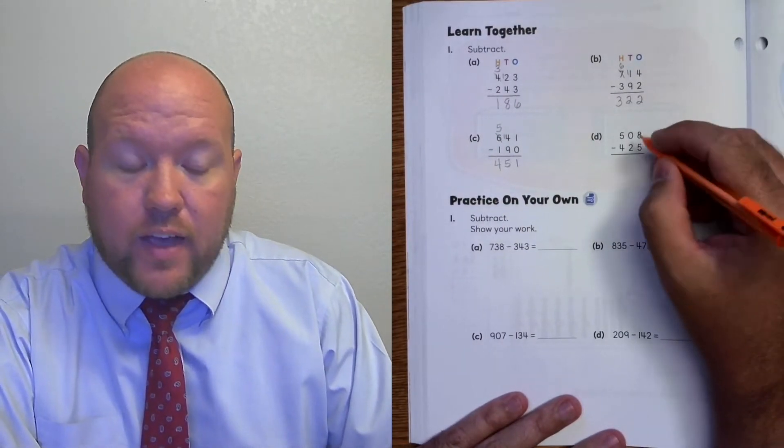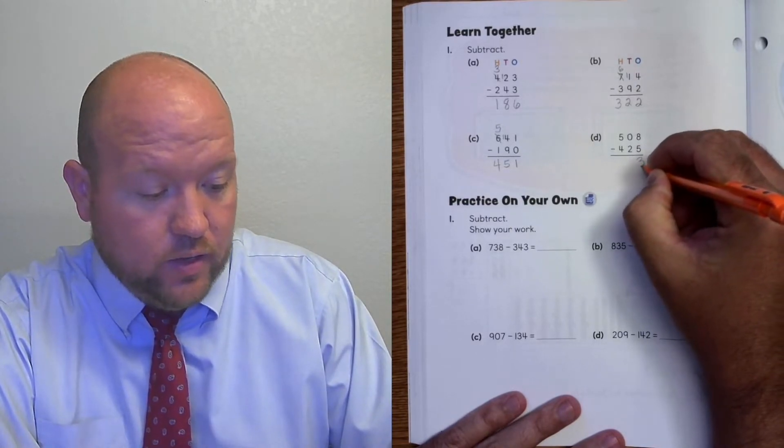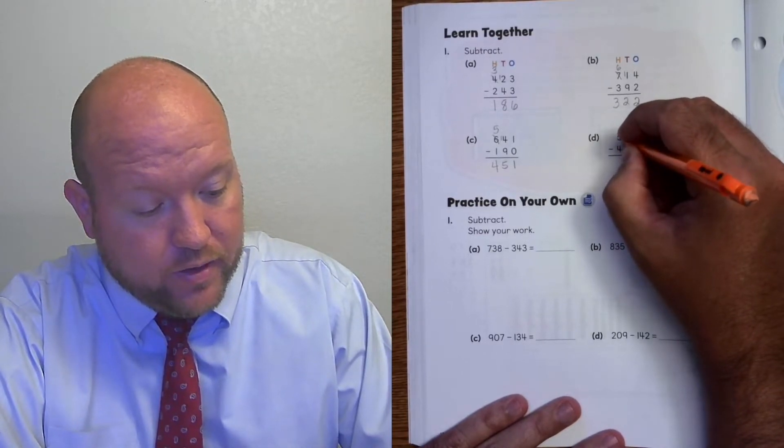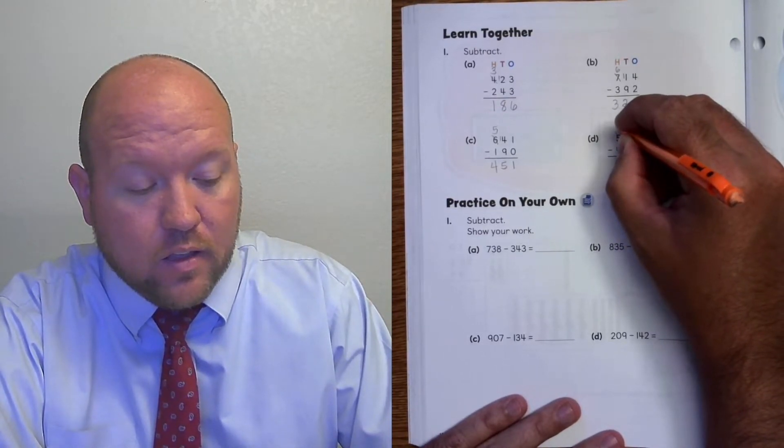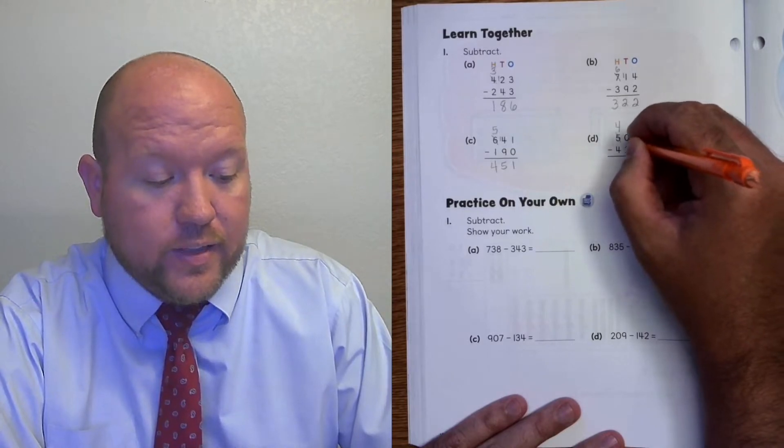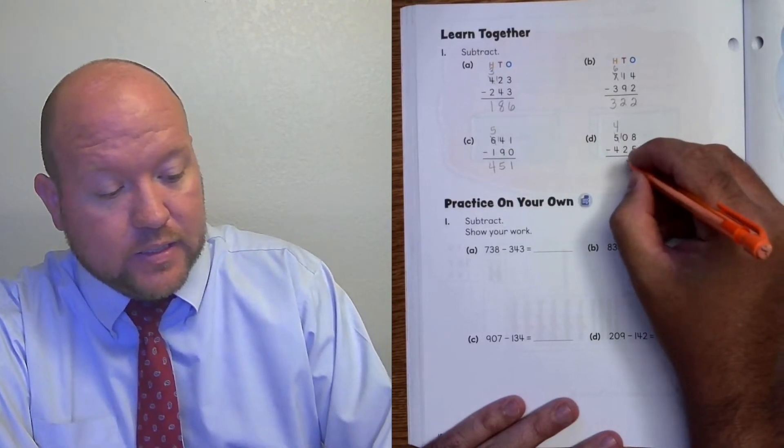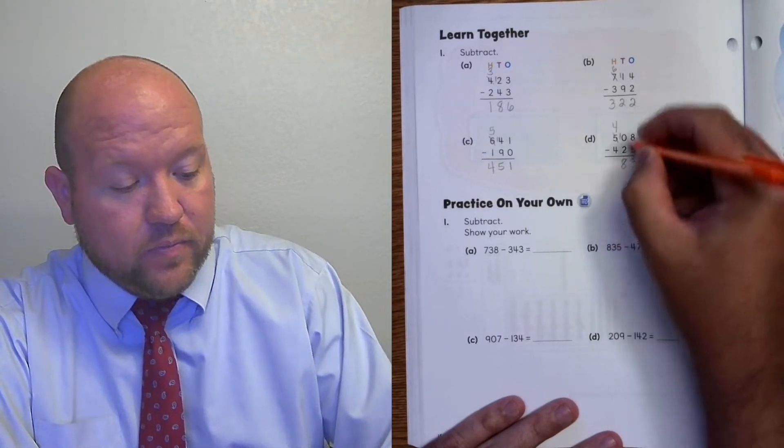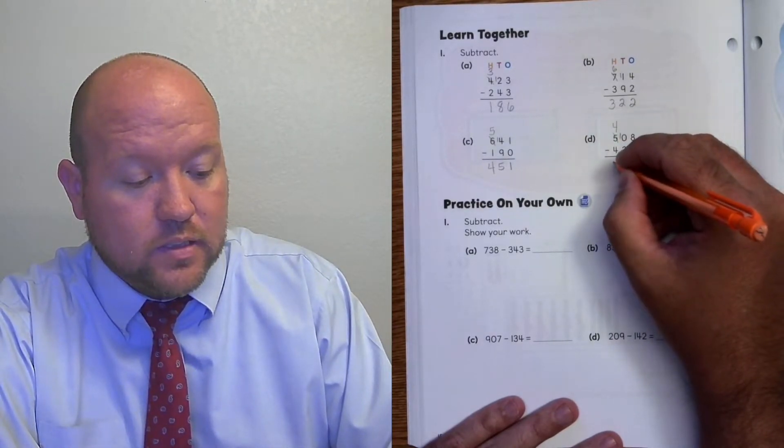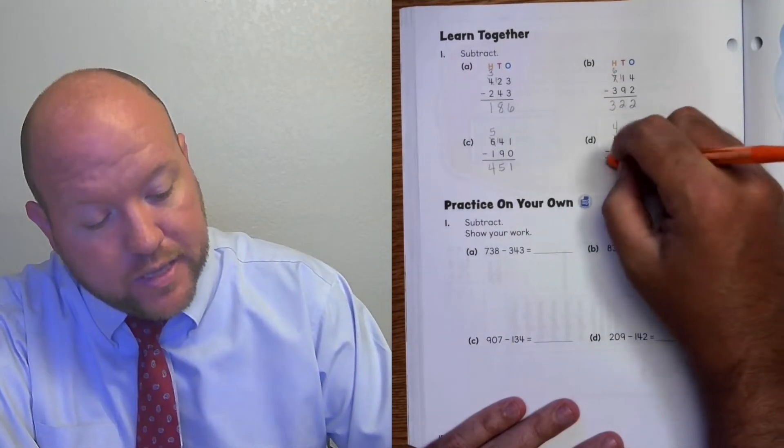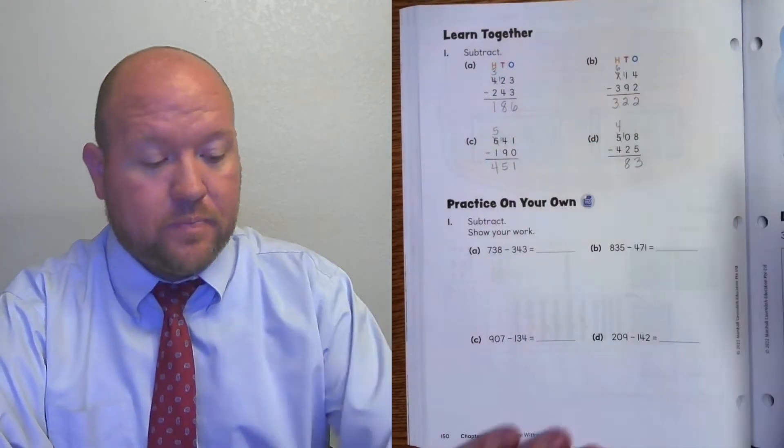8 minus 5 is 3. 0 minus 2 is... Yep. You're right. I need to rename. Cross out the 5. It becomes a 4. And the 0 becomes 10. 10 minus 2 is 8. 4 minus 4 is 0. And I don't actually need to put that 0.